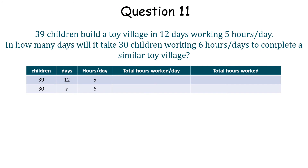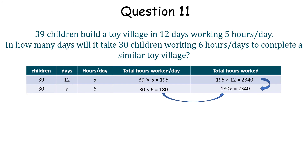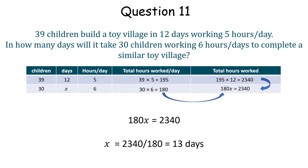39 children working for 5 hours a day is 195 hours worked. 195 hours worked over 12 days is a total of 2,340 hours worked. Now we have 30 children working 6 hours a day each, giving a total of 180 hours. Therefore, making and solving a similar equation, with a total of 2,340 hours worked and 180 total hours worked by the children in a day, this gives 13 days worked in total.